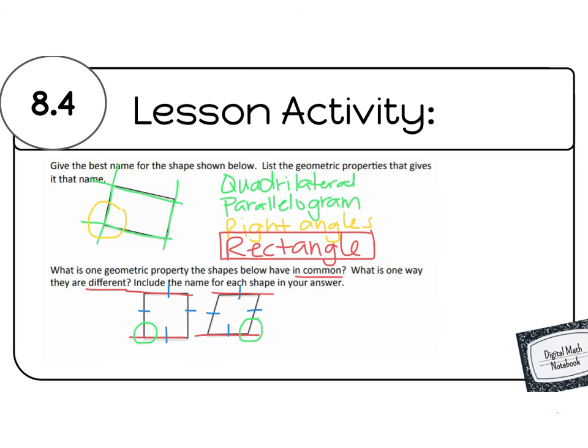So that would mean that the shape on the left is a square. And the shape on the right is a rhombus. And what they have in common is congruent sides. And what they have different is right angles.